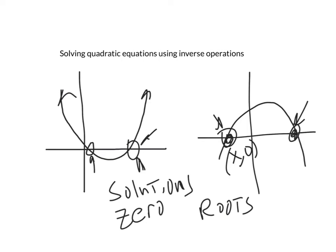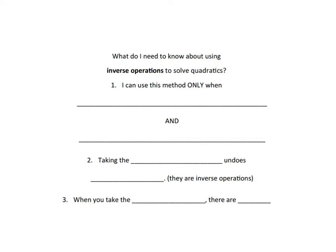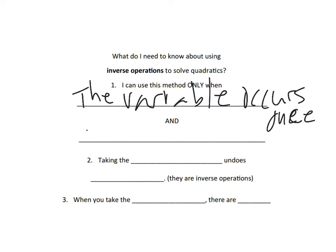Now let's learn a method. When does inverse operations work? This method of solving quadratic equations by inverse operations only works when the variable occurs once and it's squared somehow. We're going to see some examples of what I mean. It could be x squared, it could be x plus some number squared.